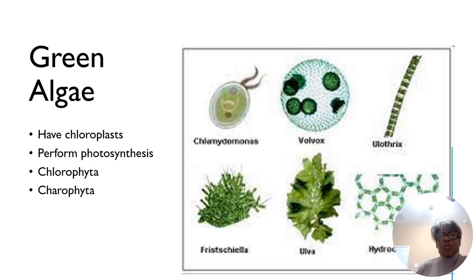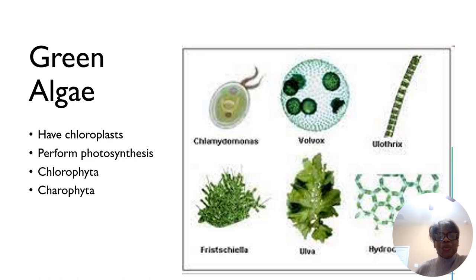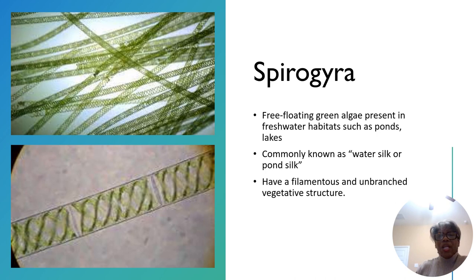Green algae can perform photosynthesis just like the land plants we are accustomed to seeing. They perform photosynthesis because they have chloroplasts — organelles located inside plants containing a photosynthetic pigment called chlorophyll. Chlorophyll is located in the thylakoids, and stacks of thylakoids are called grana. The two broad categories of green algae are chlorophyta and charophyta.